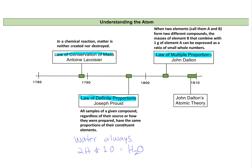The law of multiple proportions states that any two elements that will form different compounds will do so in a way that can be expressed in a ratio of small whole numbers. This is basically saying we'll never have a case where hydrogen is bonded to half of an oxygen atom — we'll always have atoms in whole numbers, so we can't split an atom in half. All this builds up to Dalton's atomic theory around 1810.